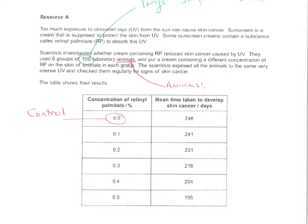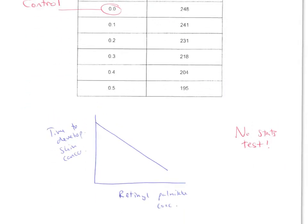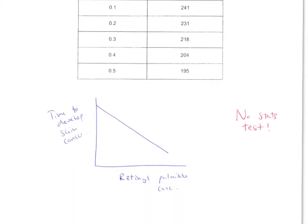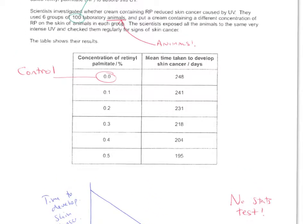The easiest thing to do if you've got a table is to do a sketch graph. From the table we can see that as the retinal palmitate concentration increases, the time taken to develop skin cancer decreases. So we've got a negative correlation in there and that can be seen by the table.